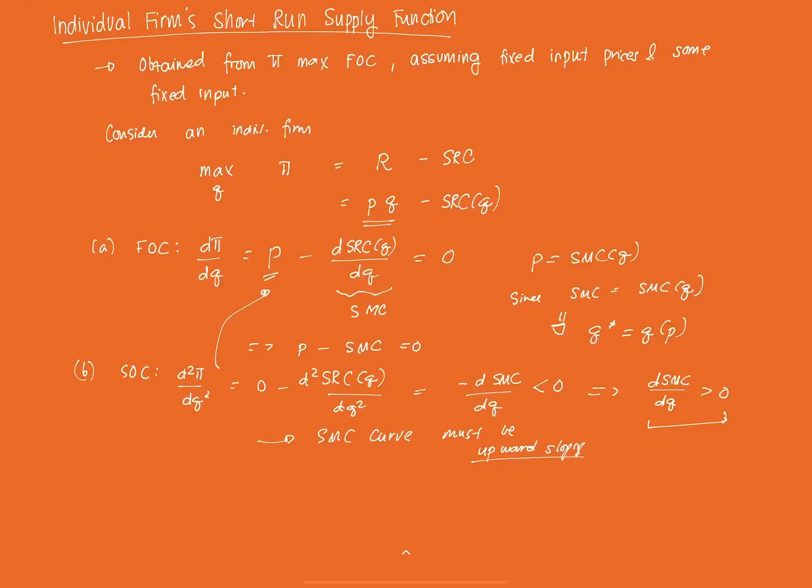So, we have a first-order condition and a second-order condition. So, these are the first two requisites to get the firm's supply curve. And there's a third requisite, which is the profitability criteria, in which we will discuss in the next video.